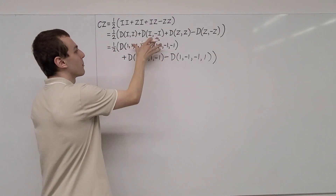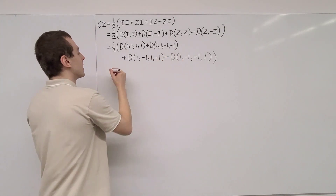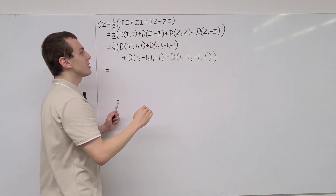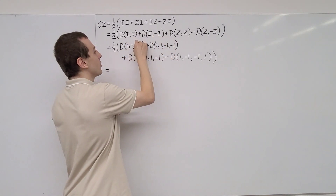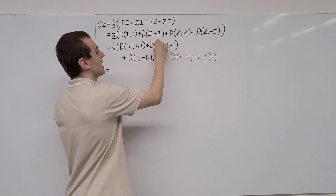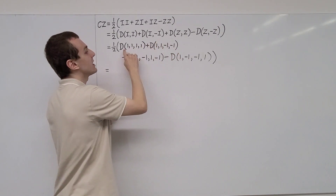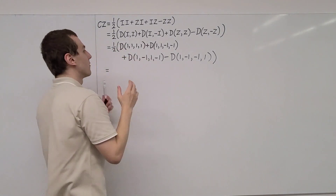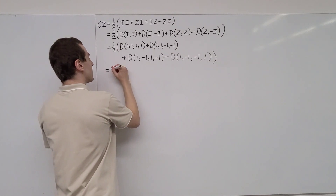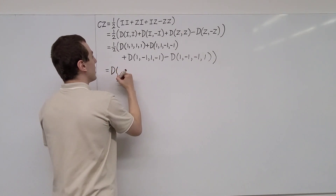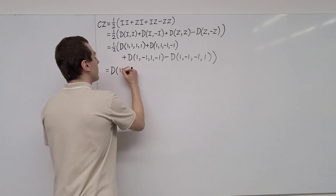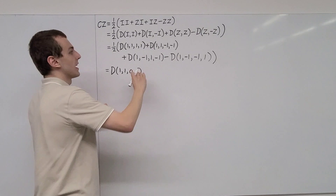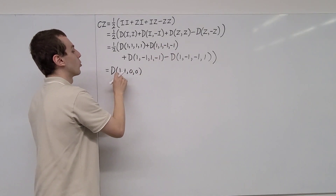Now we can combine the first two terms together and the last two terms together. If we combine the first and second terms, the third and fourth entries cancel, and the first and second entries add to give two. We have the coefficient of one-half, which multiplies to cancel that factor of two. So that's going to give us a diagonal matrix with entries 1, 1, 0, 0.